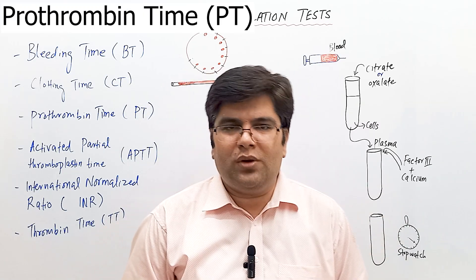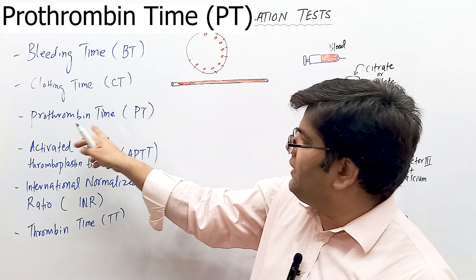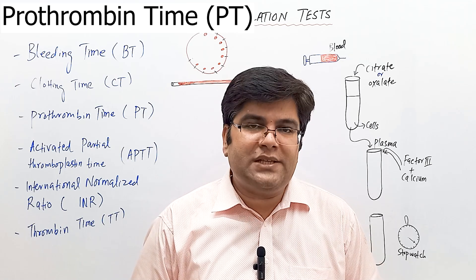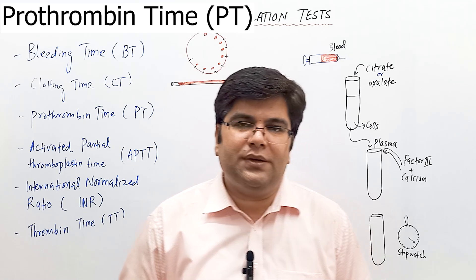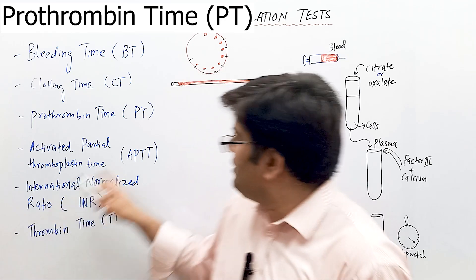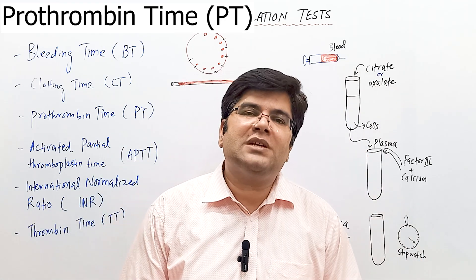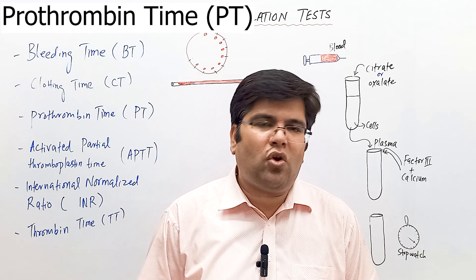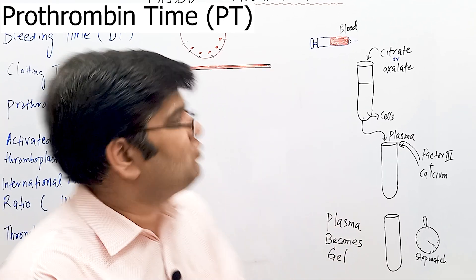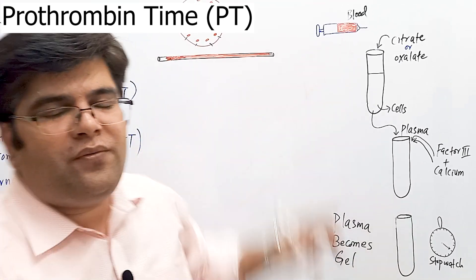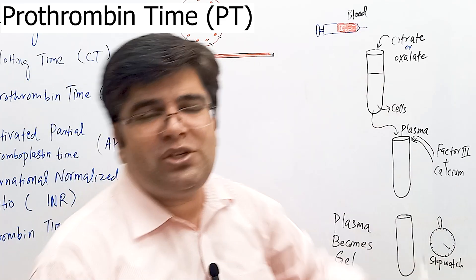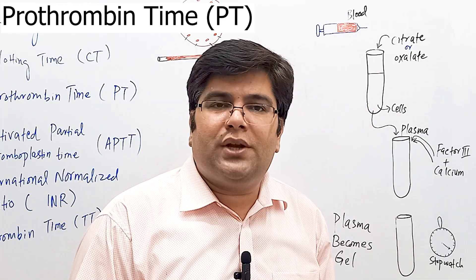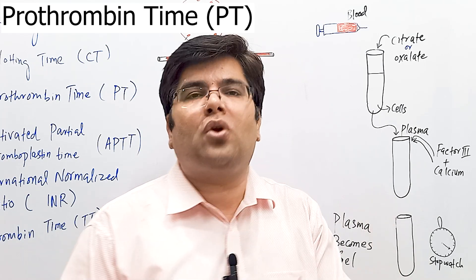Now let's talk about prothrombin time, also called PT. This is one of the routine pre-surgery tests along with APTT. PT is important for evaluating the extrinsic pathway of blood clotting because it depends on the concentration of prothrombin. When blood is collected from the patient's vein, it is immediately anticoagulated using citrate or oxalate so that none of the prothrombin is converted to thrombin.